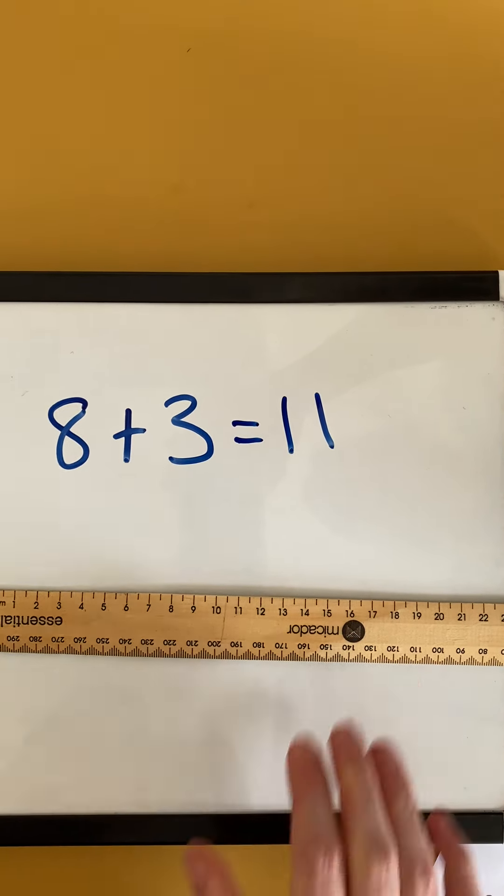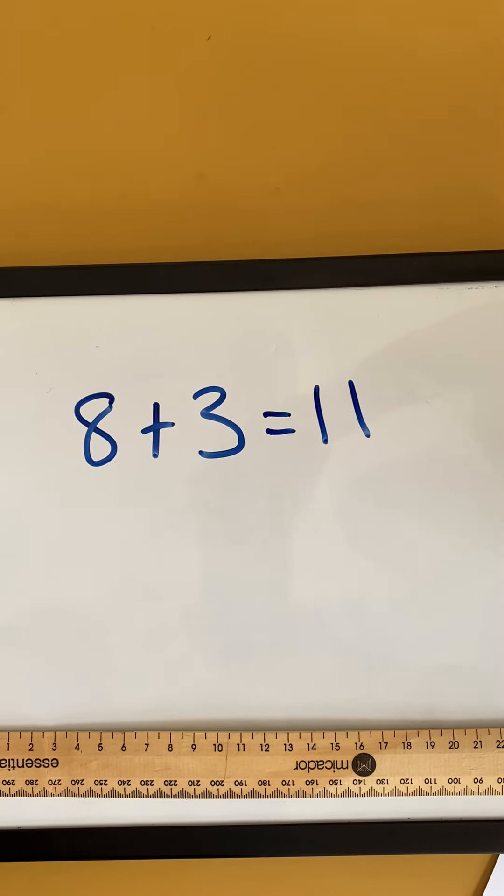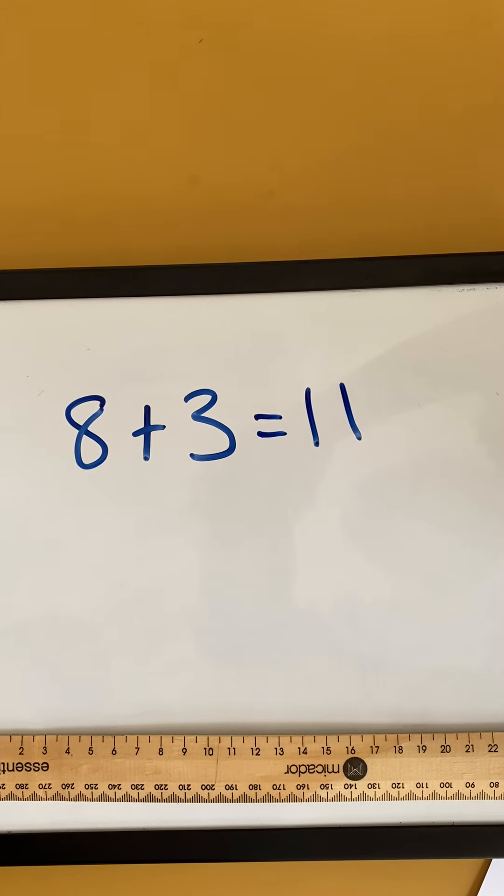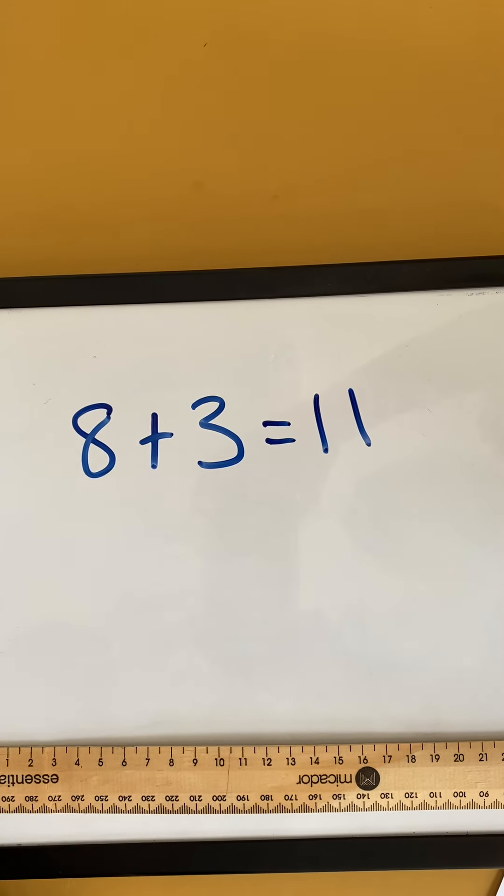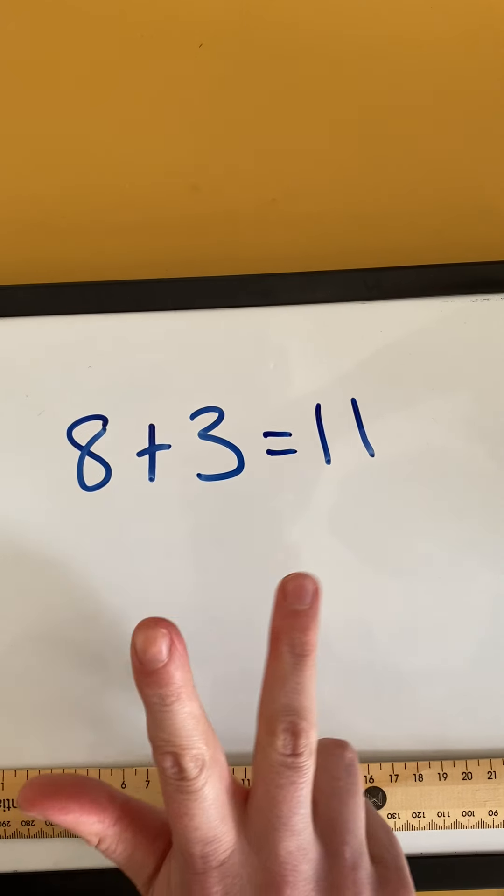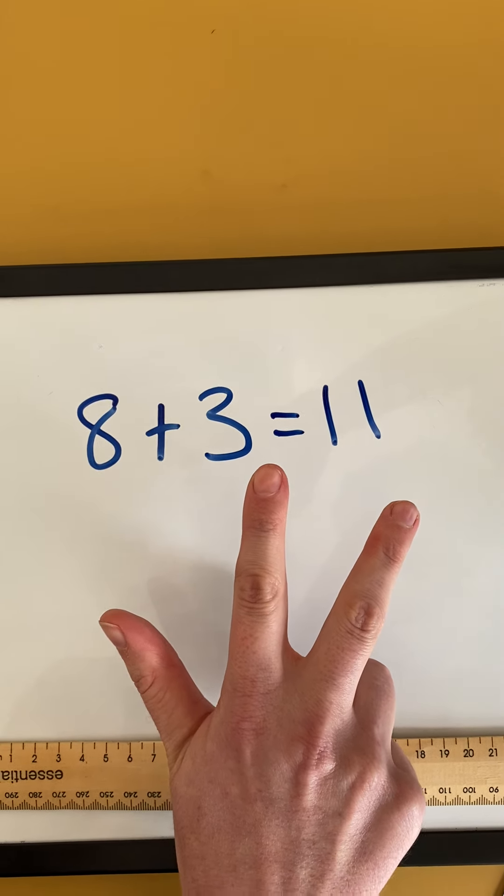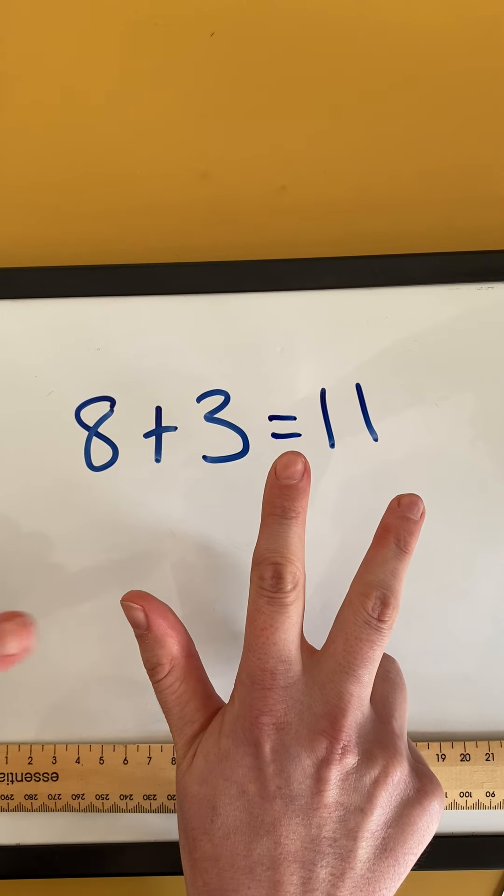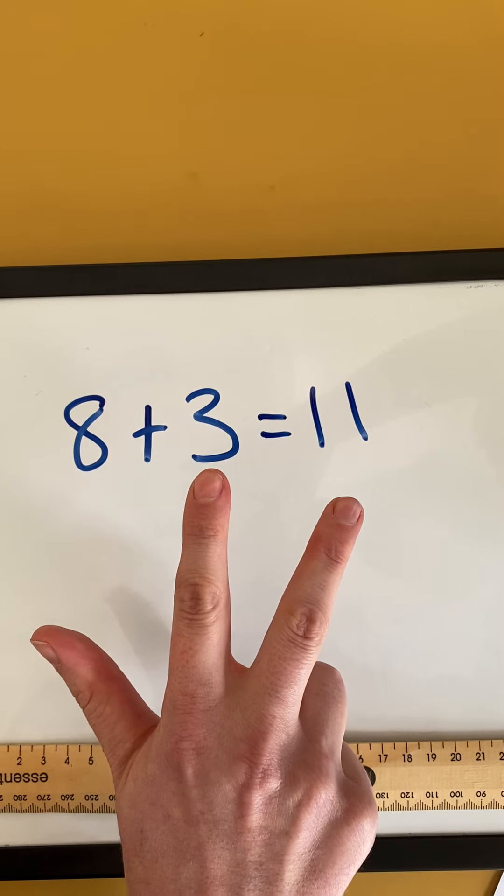Now if I didn't want to use my ruler or I didn't have a ruler at home, another way I could answer this with the counting on strategy is to use my fingers. So I know 8's my biggest number and I'm going to count on 3 more. So here's my fingers, here's my 3. So I'm going to put 8 in my head and count on 9, 10, 11 and that's my answer.